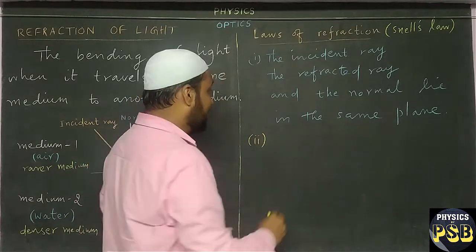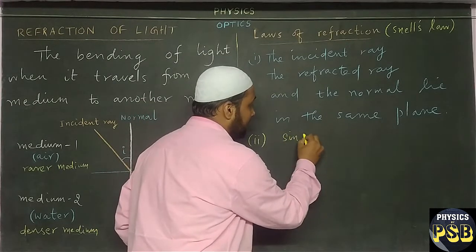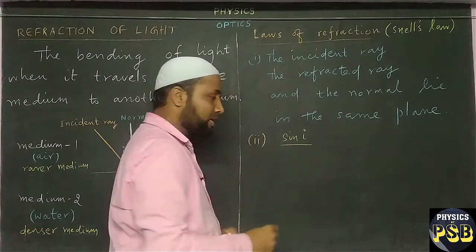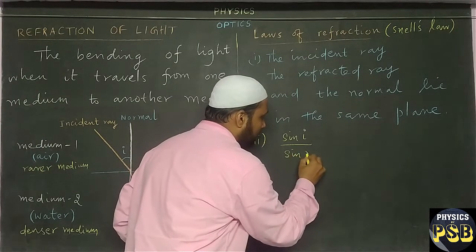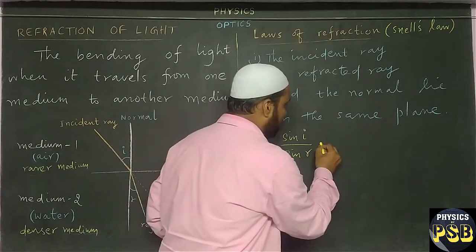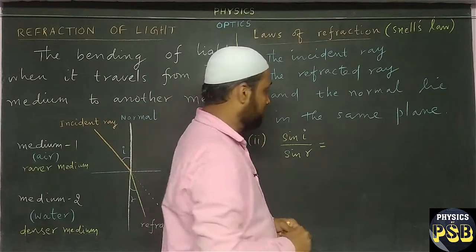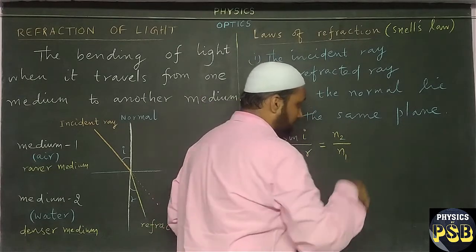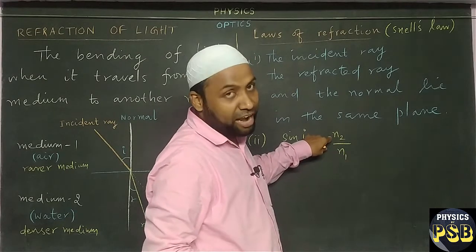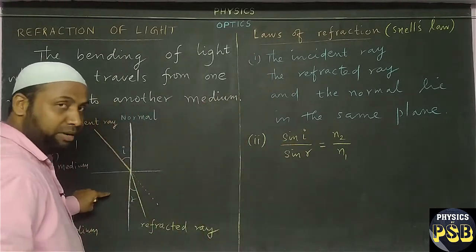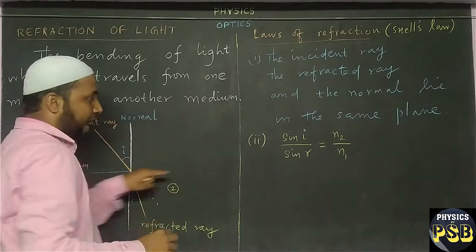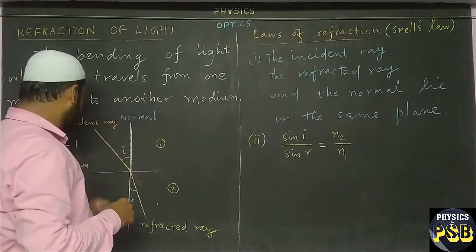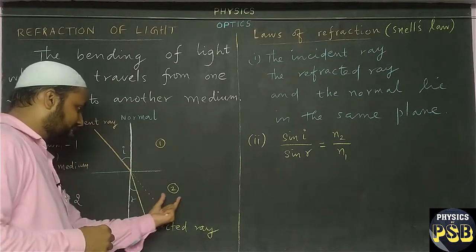The second law of refraction says that the sine of the angle of incidence upon the sine of the angle of refraction will be equal to the ratio of the refractive index of the second medium to that of the first medium. Here N2 stands for the refractive index of the second medium, and N1 stands for the refractive index of the first medium. In our case, we have taken air as the first medium and water as the second medium.